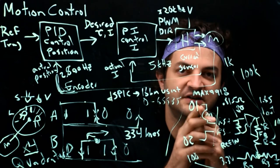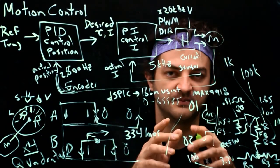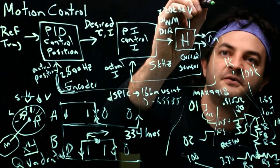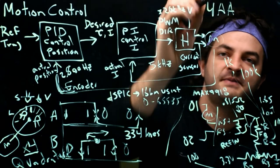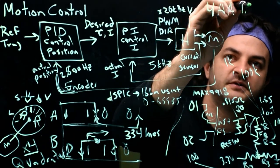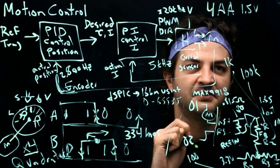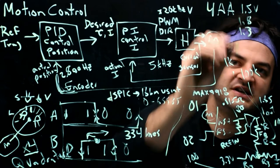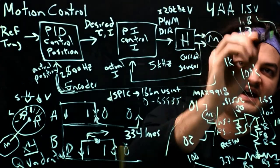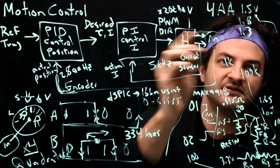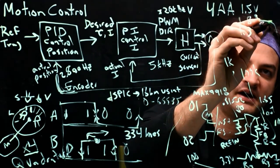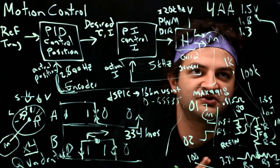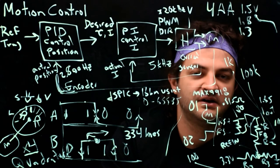To find the stall current, we need the resistance of the motor and the battery voltage. You'll have four AA batteries. A fully charged AA is about 1.8 V and a dead one is about 1.3 V — hovering around 1.5 V for most of its life. You can basically assume the battery pack is 6 V, but when brand new and fresh it's more like 6.5 V.